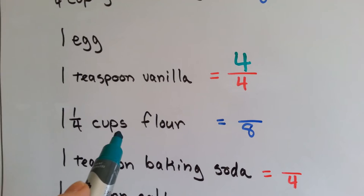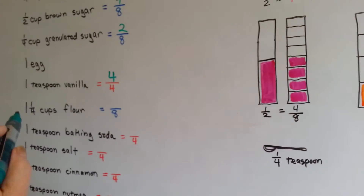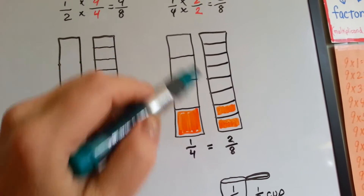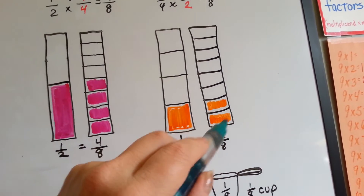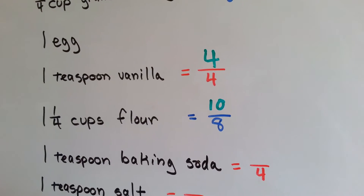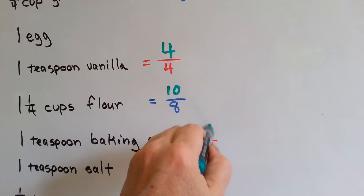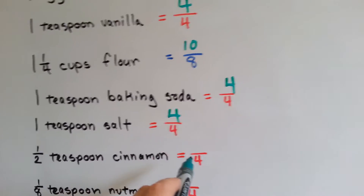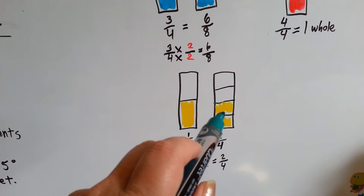We need one and one-fourth cups of flour. A fourth means two-eighths, but we need a whole one and a one-fourth. A whole one would be equal to eight-eighths, plus another fourth would be two more eighths — so eight, nine, ten-eighths. Ten-eighths is going to equal one and one-fourth cups of flour. We need one teaspoon of baking soda, and we know that four-fourths equals one. We need one teaspoon of salt — that's four-fourths. We need a half a teaspoon of cinnamon — a half is equal to two-fourths. One-half is the same thing as two-fourths.